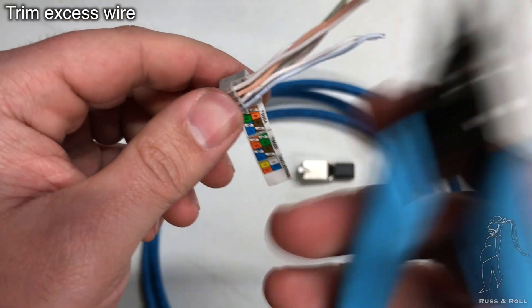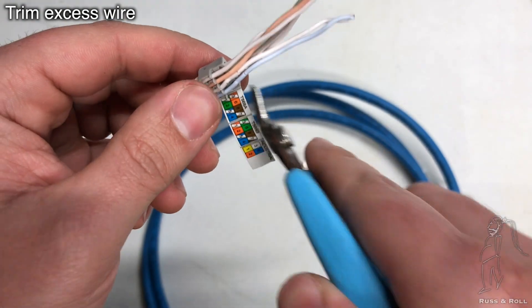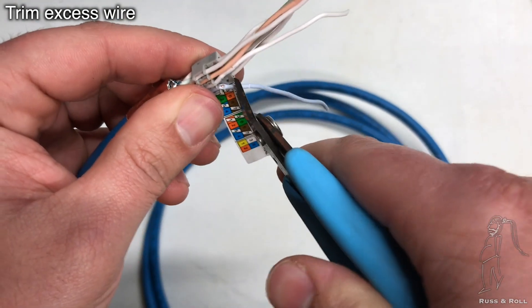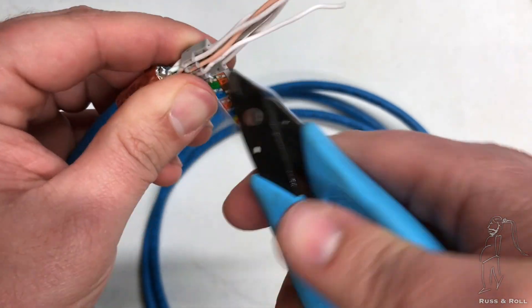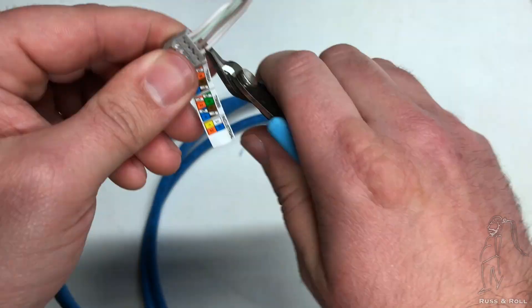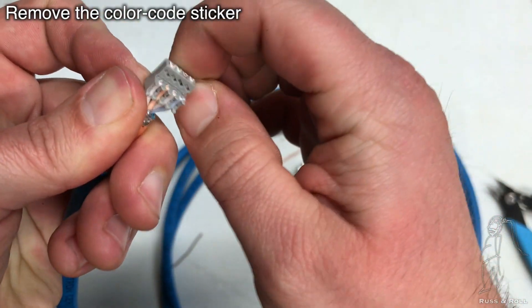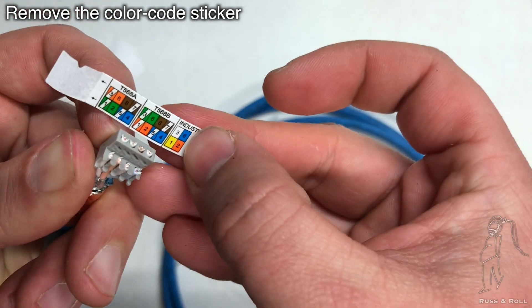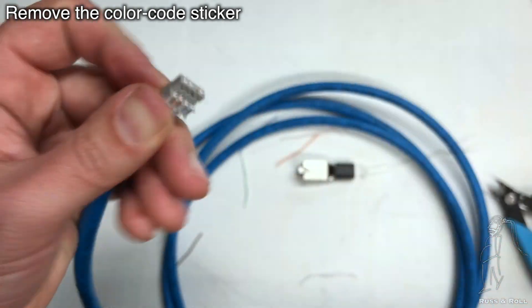Now it's time to cut the excess wire off using your flush cutters. Remember to cut as close as you can to the retainer to leave as little wire hanging off the end as possible. Now as awesome as this little color code flag is, it does have to come off. So pull that guy off, but hang on to him in case you need to re-terminate the cable later.